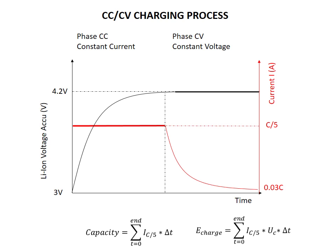Let's now study more of this graphic. From this graphic, we can extract two pieces of information: the capacity and the energy for charging the battery. The capacity is simply the quantity of electrons that has been put into the battery — from this formula, it represents the area of the surface below the red curve. The energy of the charging process is given by this formula, where you can see the current and the voltage. Current multiplied by voltage is power, and power multiplied by time is energy.